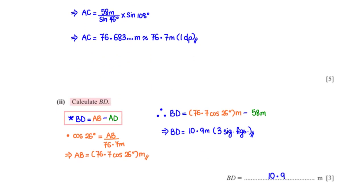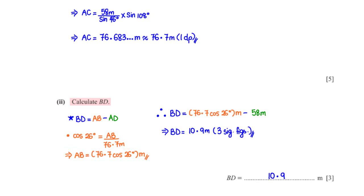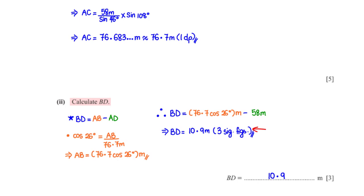Calculate BD. BD = AB minus AD. We find AB by applying SOHCAHTOA to triangle ADC: cos 26° = AB / 76.7, so AB = 76.7 × cos 26°. Subtracting AD = 58 m from AB, and typing into the calculator, we get BD = 10.9 m rounded to three significant figures.